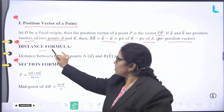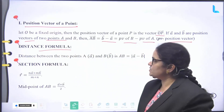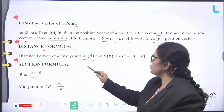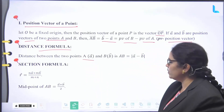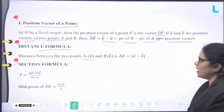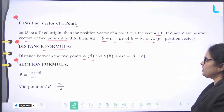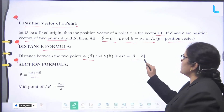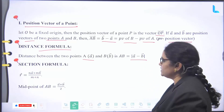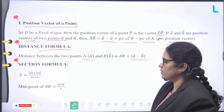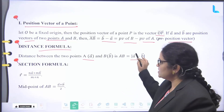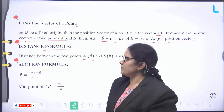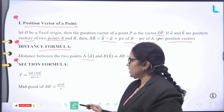Distance formula. The distance between two points A and B with position vectors A arrow and B arrow is: AB equals mod of (A arrow minus B arrow). This is the distance between position vectors formula.